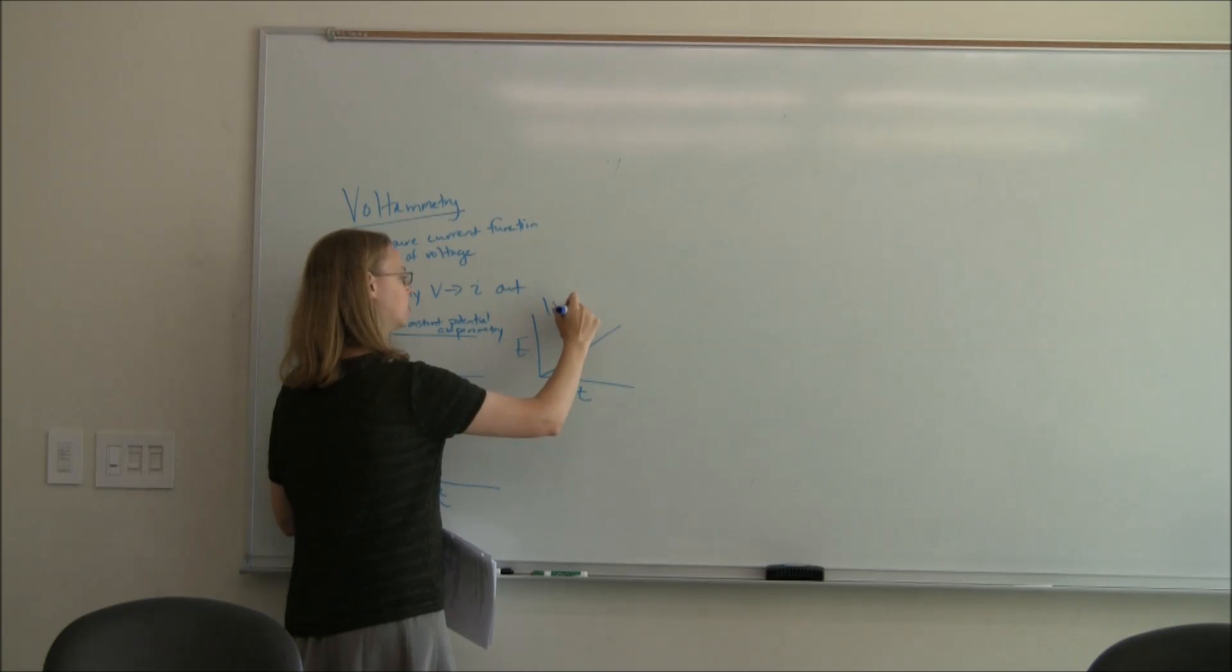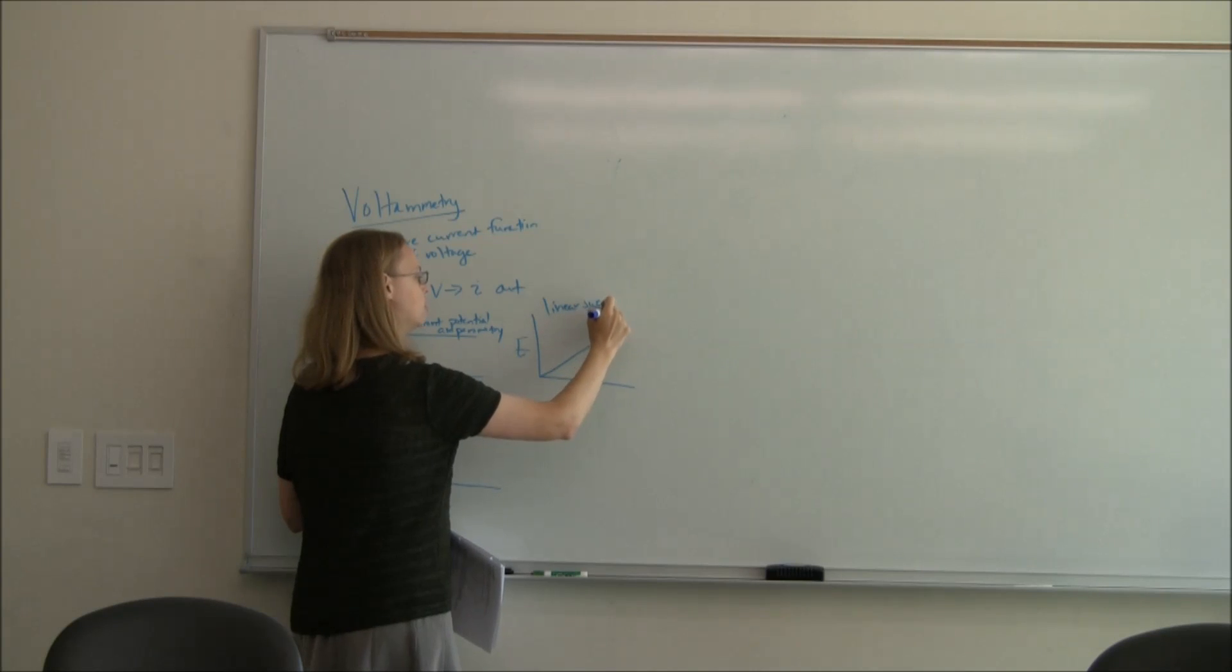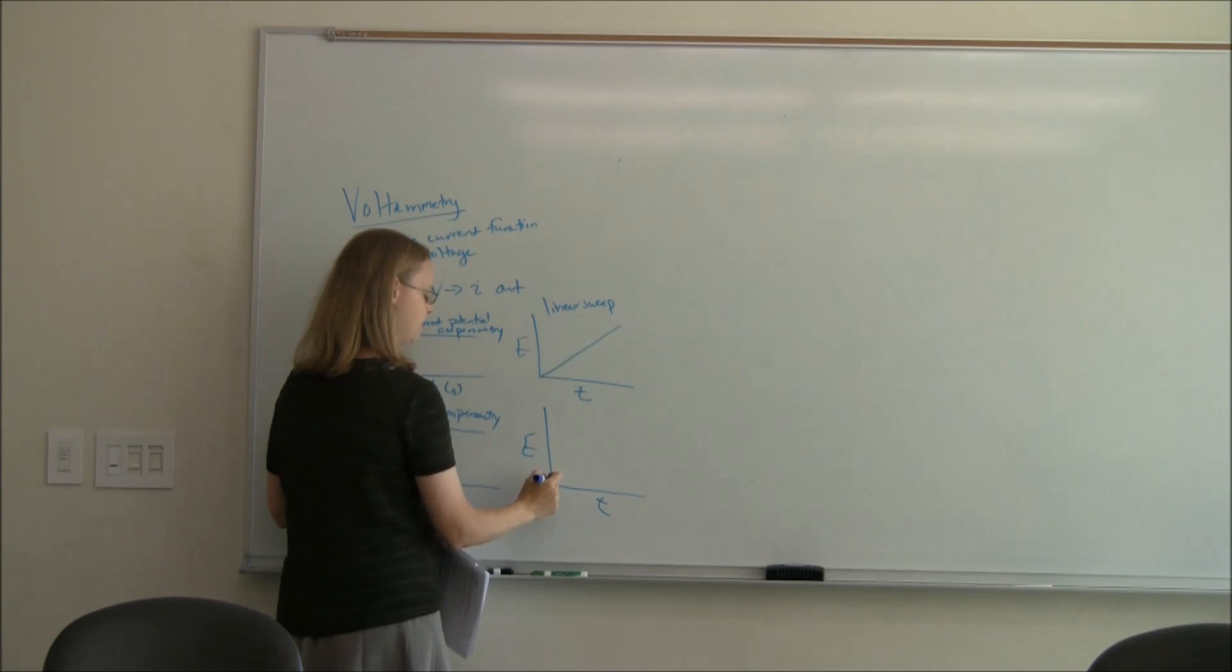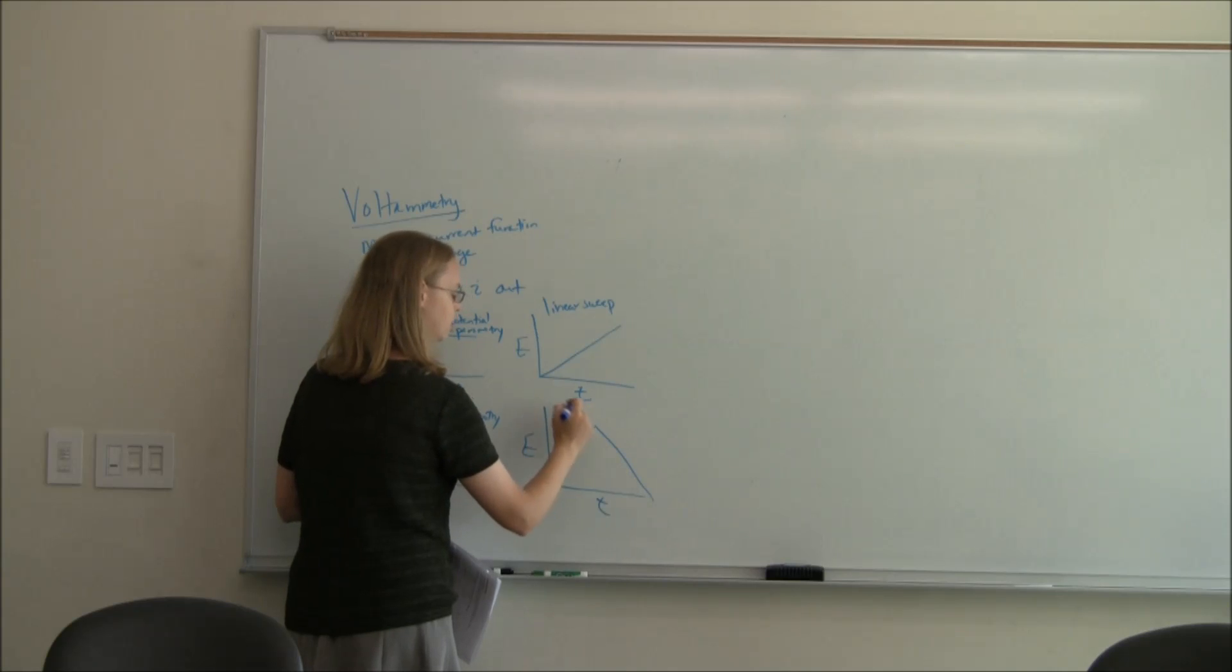This is called linear sweep. And if we decide I don't want to end up there and I need to come back down, then we have cyclic voltammetry.